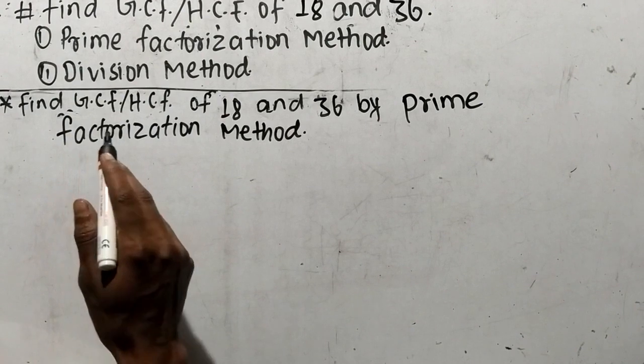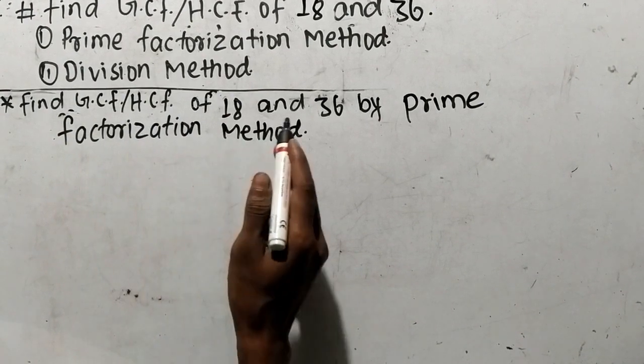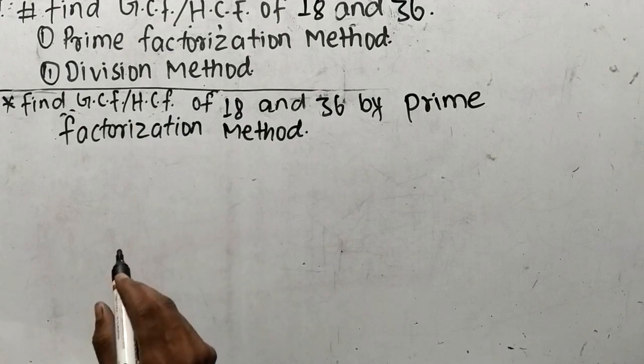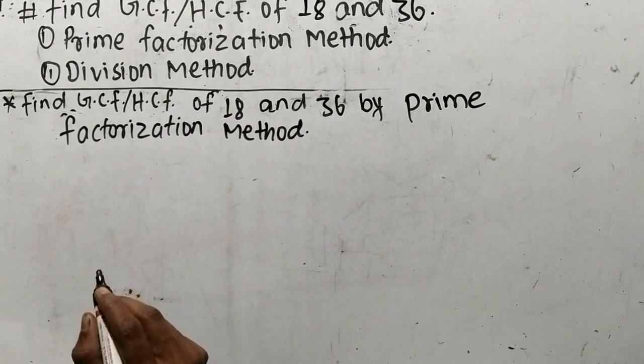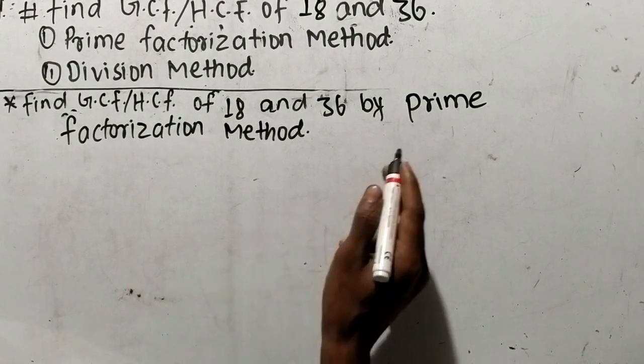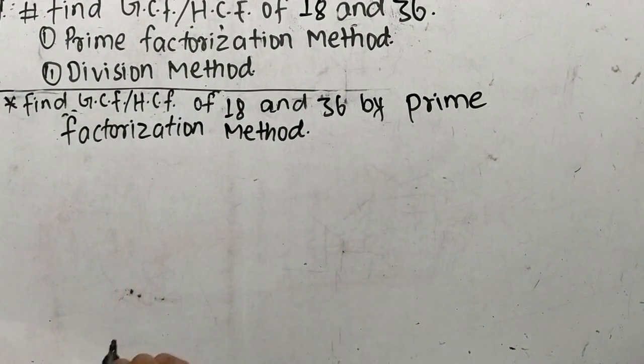So, let's find out GCF or HCF of 18 and 36 by prime factorization method. While finding out GCF or HCF by prime factorization method, first of all we have to find out the prime factors of given numbers.